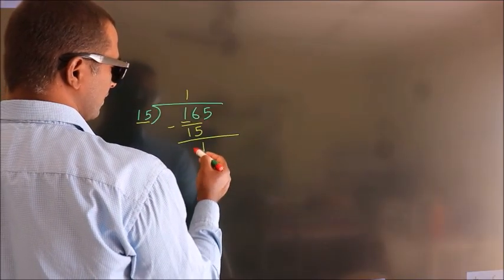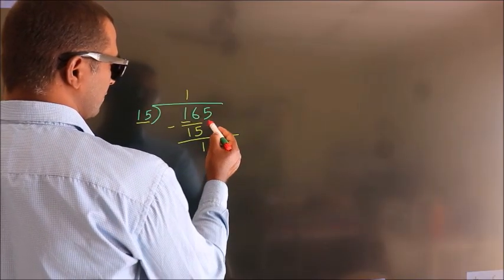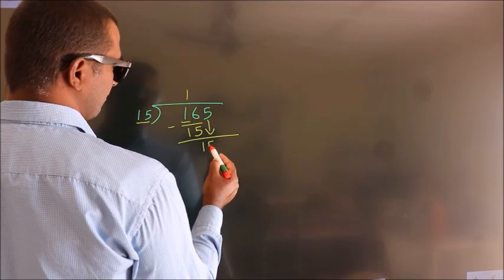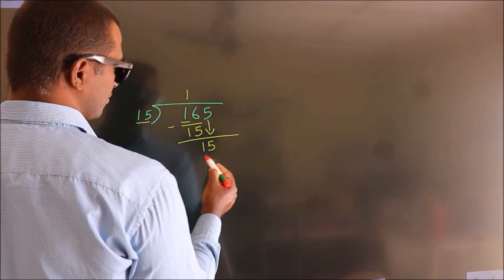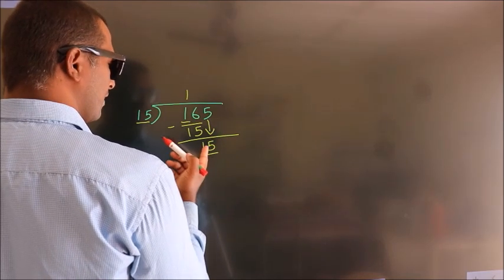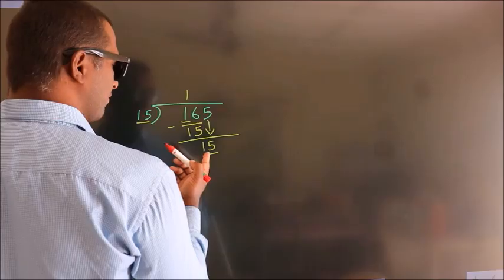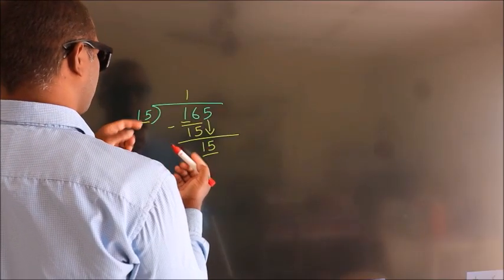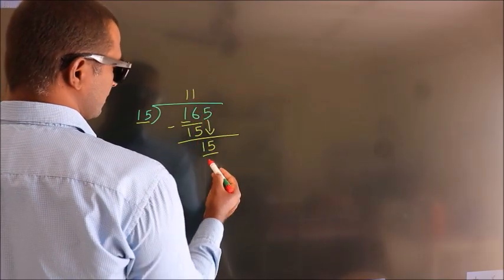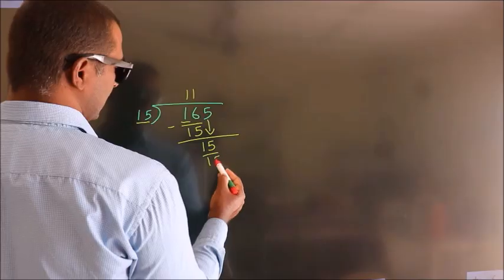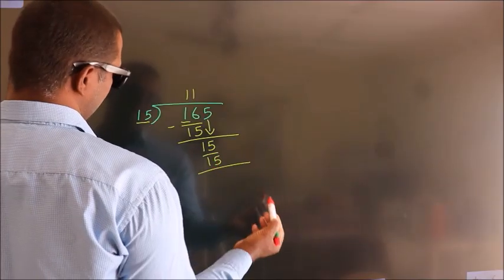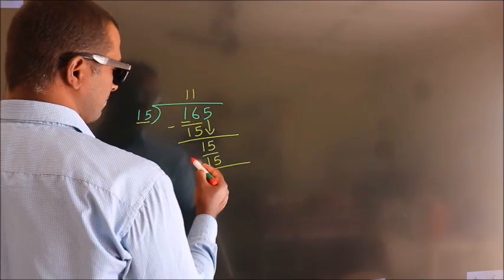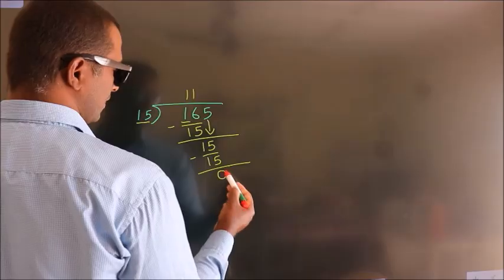After this, bring down the beside number. So 5 comes down, giving us 15. When do we get 15? In the 15 times table — 15 once is 15. Now we should subtract, and we get 0.